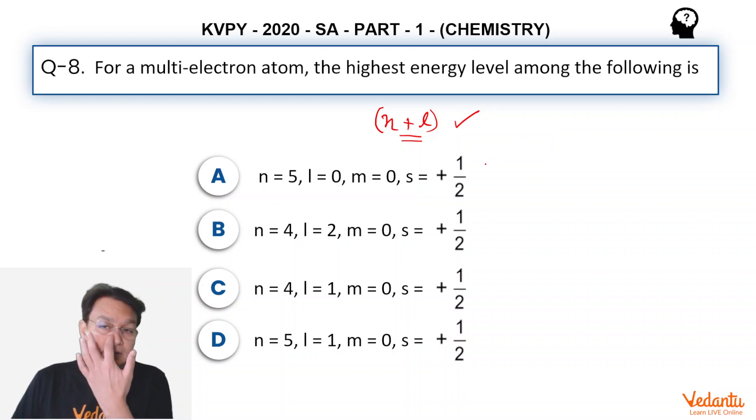So clearly, if you see that option A, the N plus L value is equals to 5. Option B, N plus L value is equals to 6. Option C, the N plus L value is 5. Option D, the N plus L value is 6.